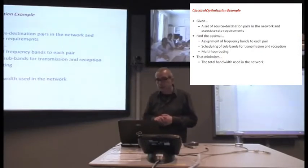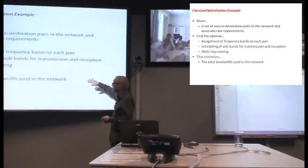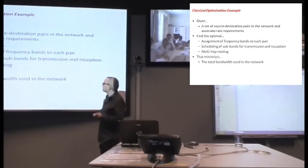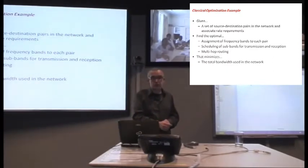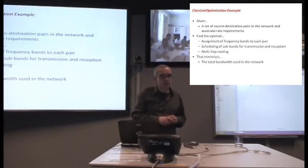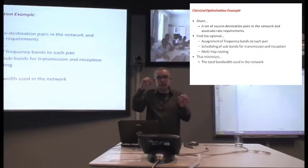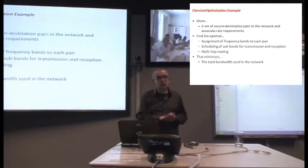Well, here's an example. You might have a set of source-destination pairs in the network and associated rate requirements for these pairs of nodes. And you may try to find the optimal assignment of frequency bands to each pair of nodes. And then within that, you may want to schedule the subbands used for transmission and reception. You may be talking about a multi-hop network type of situation, so you may also want to optimize the routing from source to destination.